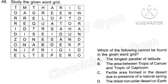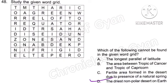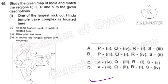Question 48: Study the given word grid. Which of the following cannot be found in the given word grid? The correct answer is Option D — the driest non-polar desert cannot be found in the word grid.